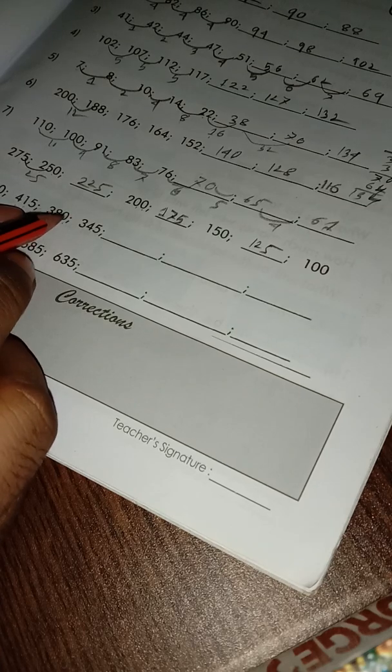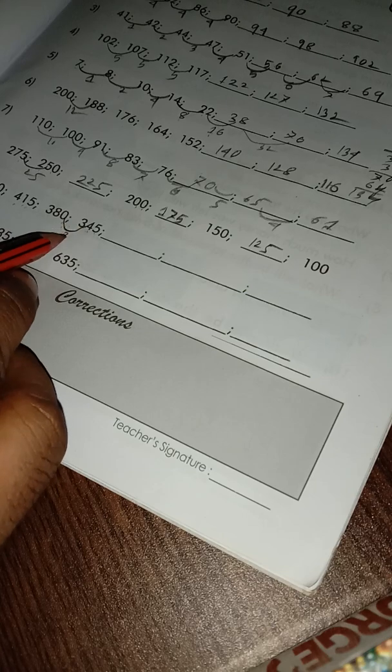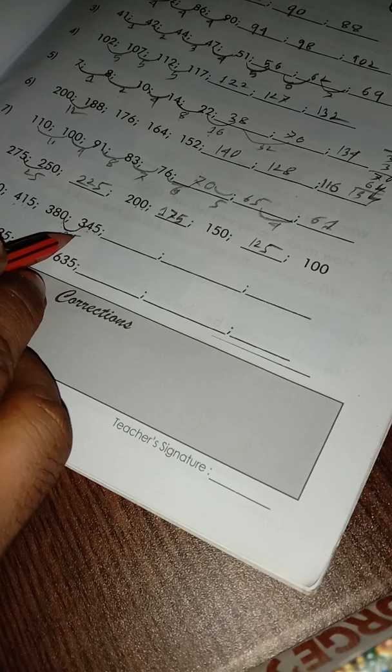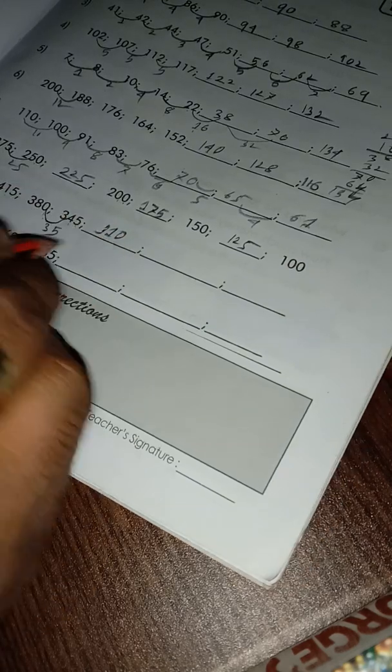380, and 35 equals 345. Difference is 35. Now 345 minus 35 equals 310, 310 minus 35 equals 275.